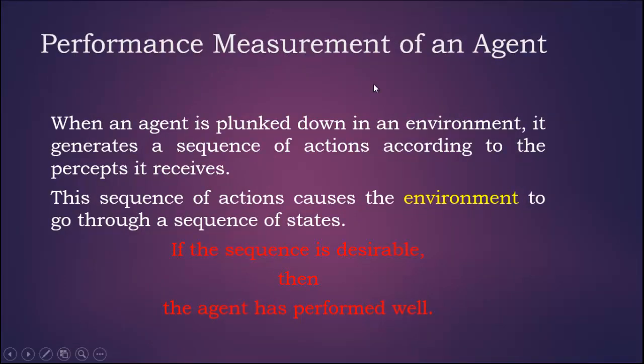How can we measure the performance of an agent? When an agent is placed in an environment, it generates a sequence of actions according to the percepts it receives. This sequence of actions causes the environment to go through a sequence of states. If the sequence is desirable, then we can say that the agent has performed well.